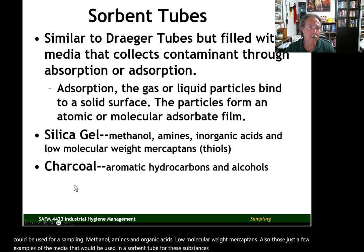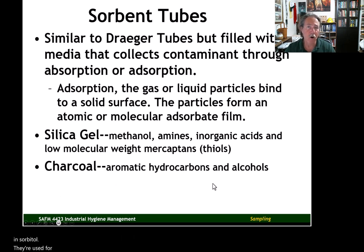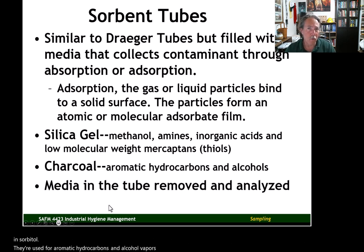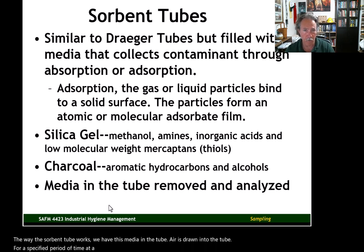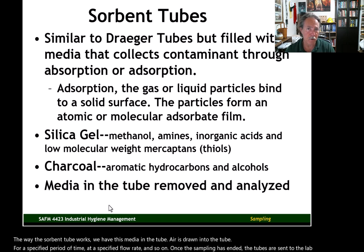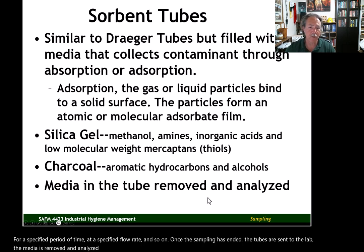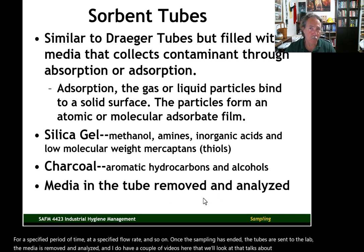Charcoal is a common media you'll see in sorbent tubes, used for aromatic hydrocarbons and alcohol vapors. The way the sorbent tube works: air is drawn into the tube for a specified period of time at a specified flow rate. Once sampling has ended, the tubes are sent to the lab, the media is removed and analyzed.